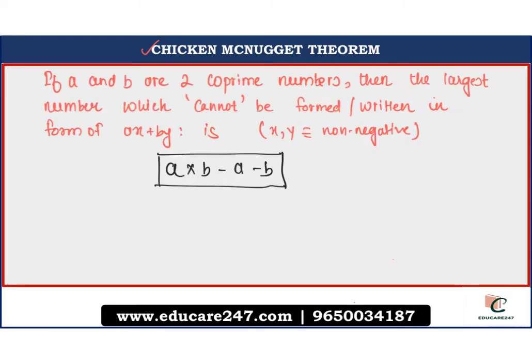The theorem states if a and b are two co-prime numbers, then the largest number which cannot be formed or written in the form of ax plus by is a times b minus a minus b. The story behind this concept is pretty much interesting. Once in McDonald's, chicken nuggets used to be available in denominations of 9 and 20. Once a person wondered what would be the largest number of nuggets one could not have even if any combination of two denominations were used. The answer was tested by hit and trial method and it came out to be 151. Mathematically the answer can be found out using this formula.